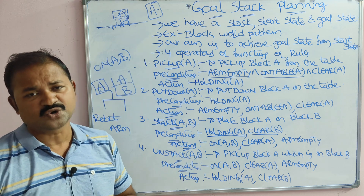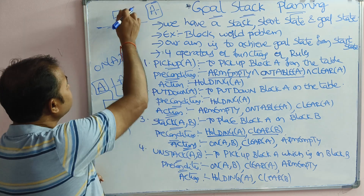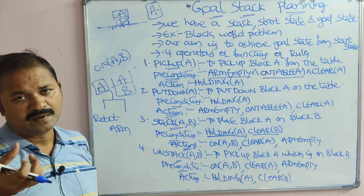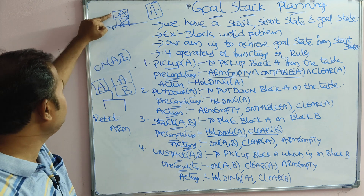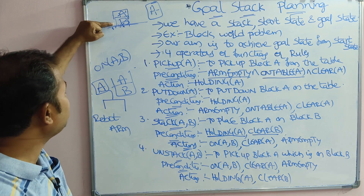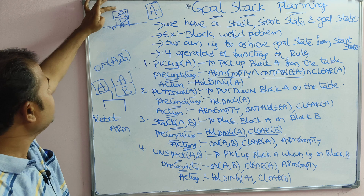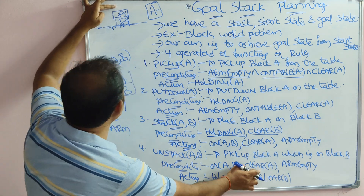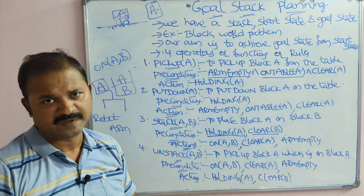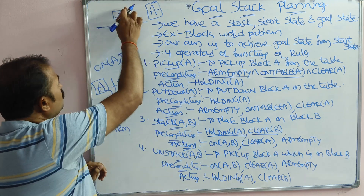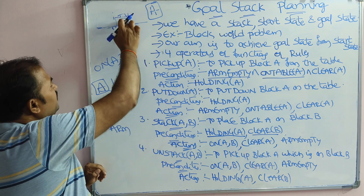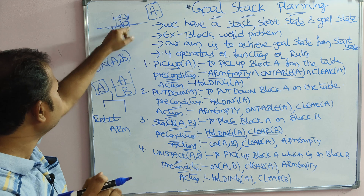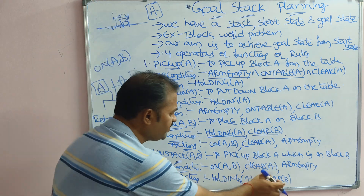The fourth operator is unstack(A, B), which means pick up block A from block B. The preconditions are: on(A, B) — block A is currently on block B — clear(A) — no blocks on top of A — and arm-empty. The resulting actions are: holding(A) — the robot arm now holds block A — and clear(B) — the top of block B is now clear.